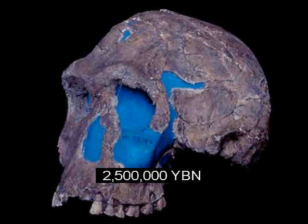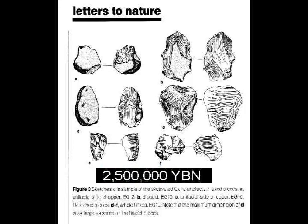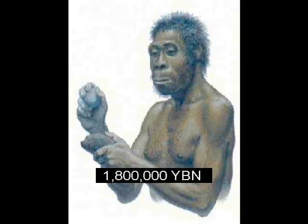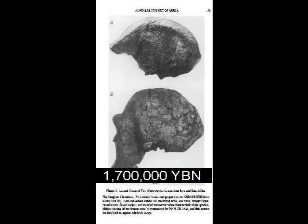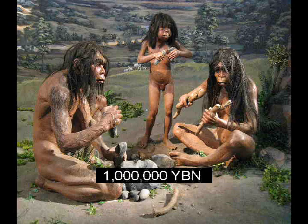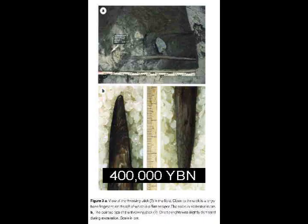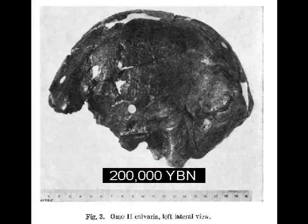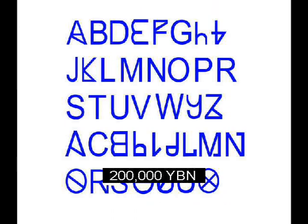Homo habilis — the human brain starts getting bigger. Stone tools. Homo erectus. Homo erectus moves into Eurasia. Controlled use of fire. Erectus evolves less body hair. Sphere. Humans — Homo sapiens.